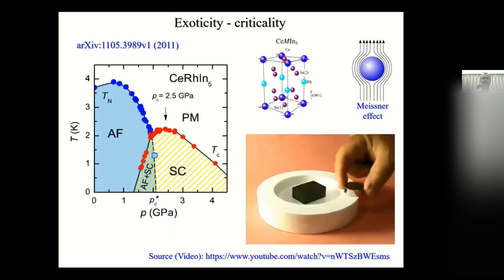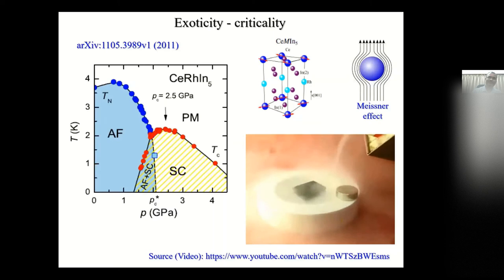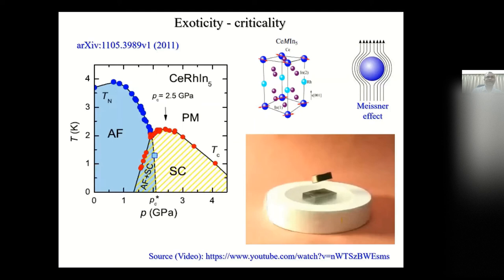Superconductors don't really like magnetism — as a simple demonstration, you can see a magnet levitating above a superconductor cooled with liquid nitrogen, known as the Meissner effect. So how a material can have antiferromagnetism and superconductivity actually coexisting is very surprising. There are many other materials where this happens, and I'll show more examples where this kind of coexistence occurs.